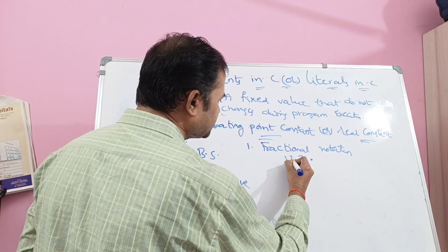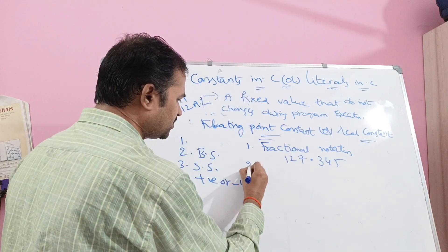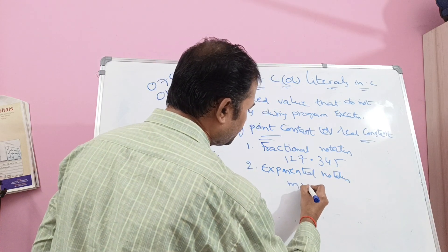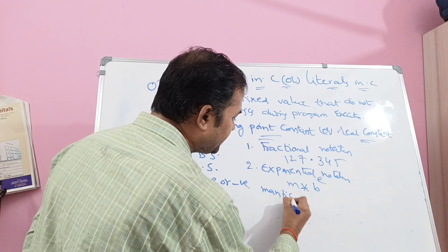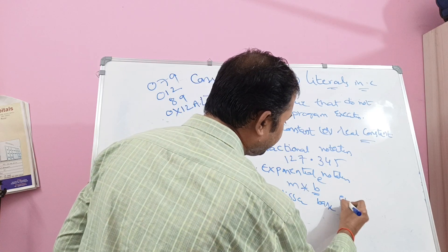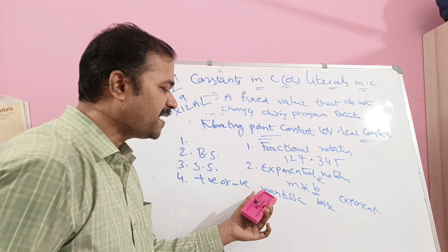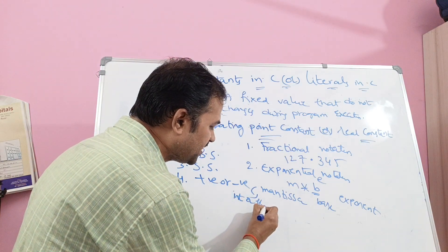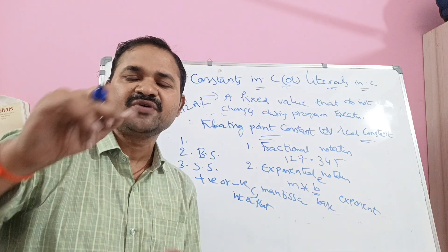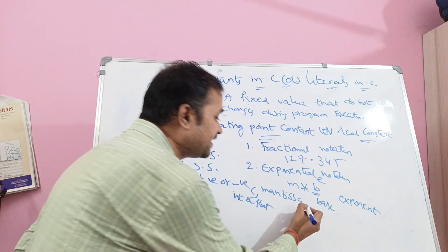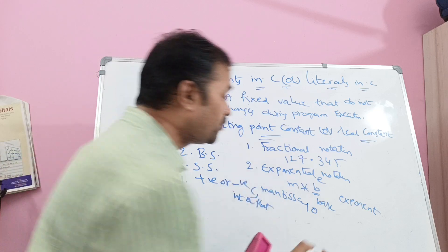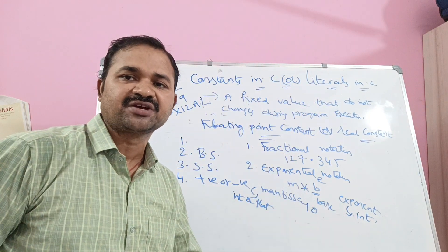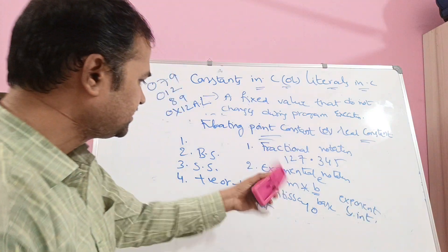In fractional notation, a dot is required with minimum one digit. In exponential notation, the mantissa value may be either an integer or floating point number, and may be positive or negative. The base value, if not specified, defaults to 10. The exponent must be a positive or negative integer number — the exponent should not be a floating point number.